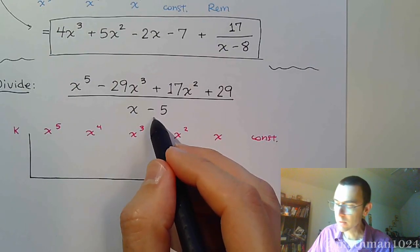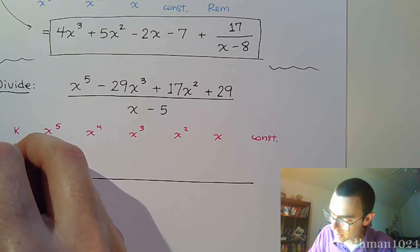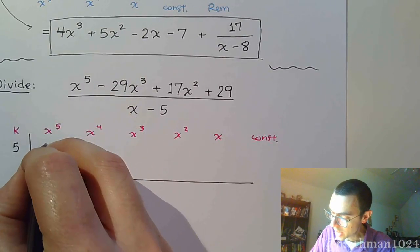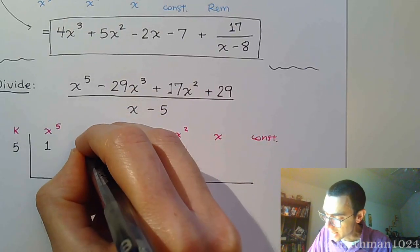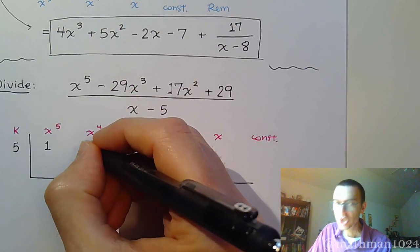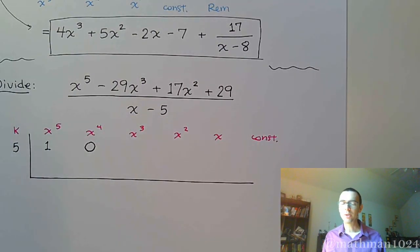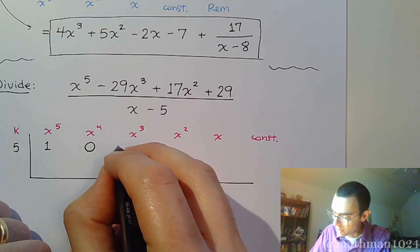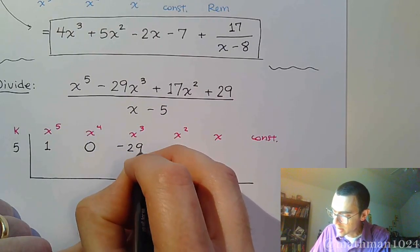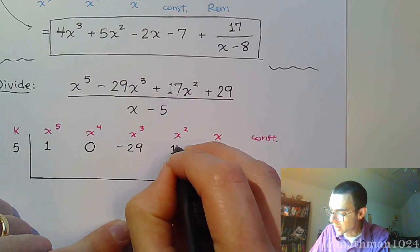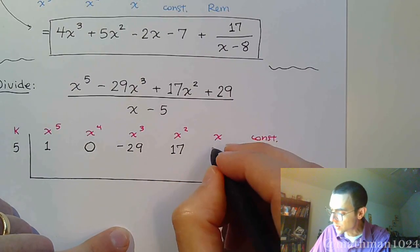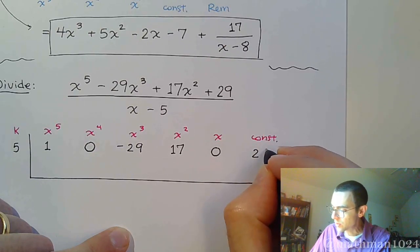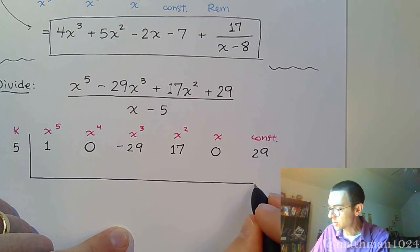Our K, we see negative 5, so we do the opposite, which is positive 5. We have 1x to the 5th. This is minus 29x to the 3rd. So we don't have any x to the 4th, so we write 0. Remember that 0 and 1 are not the same. Negative 29 here for x to the 3rd plus 17x squared. This says plus 29, not 29x, so it's 0 for the x and 29 for the constant term.